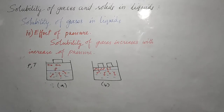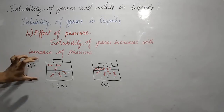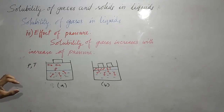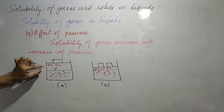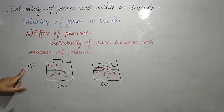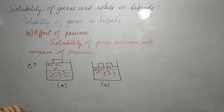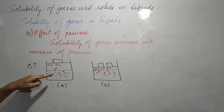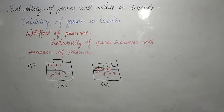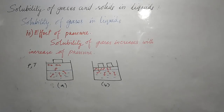The third factor is the effect of pressure. The solubility of gases increases with increase of pressure. Let us see experimentally how this happens. Consider a system where gas molecules are in dynamic equilibrium with the solution — the lower part shows the solution phase and the upper part shows the gaseous system at pressure P and temperature T. Dynamic equilibrium means the number of gaseous molecules entering the solution phase equals the number of dissolved molecules leaving it.